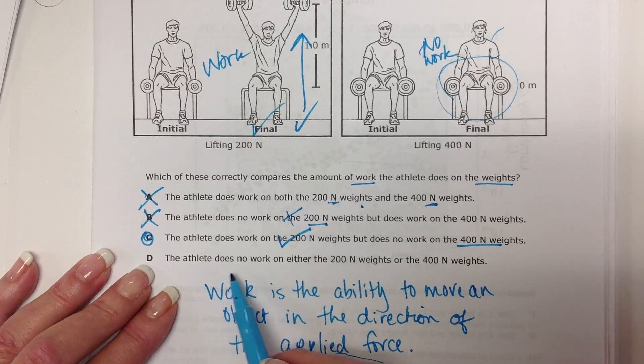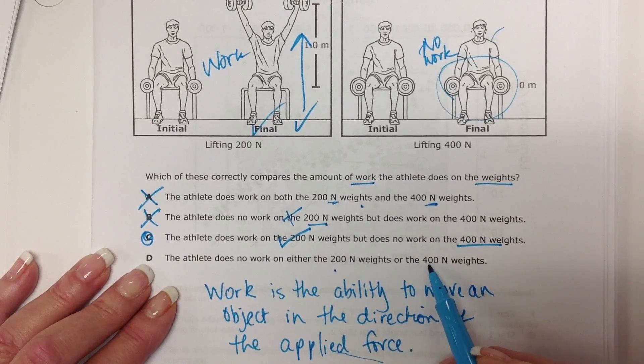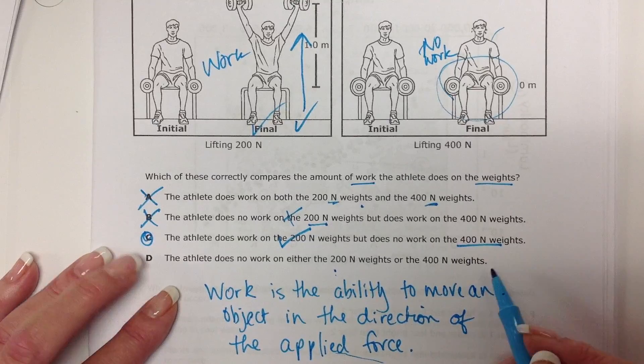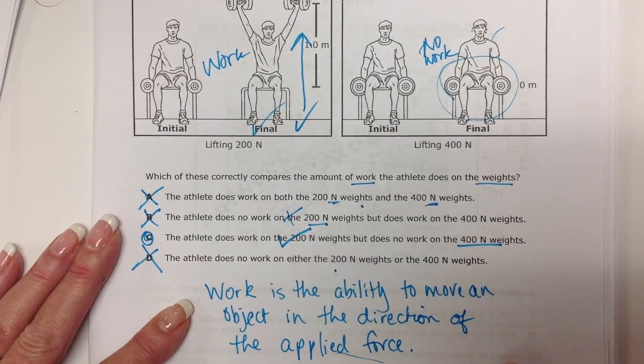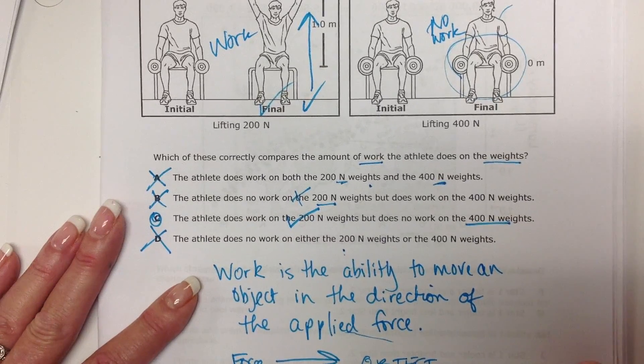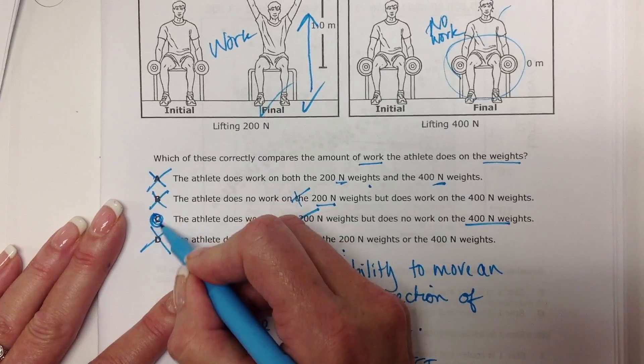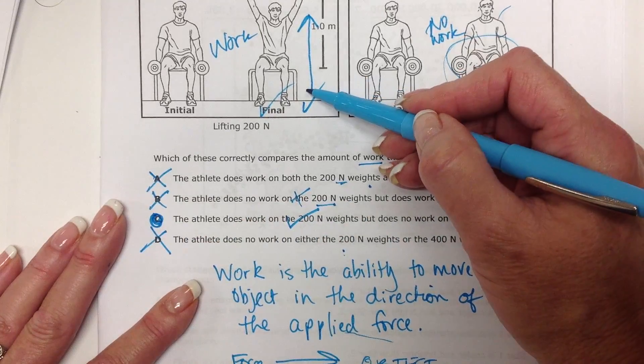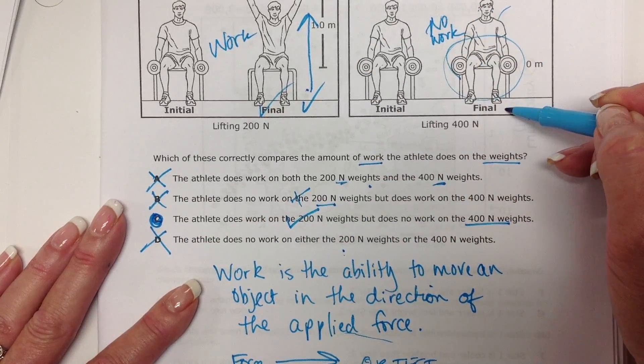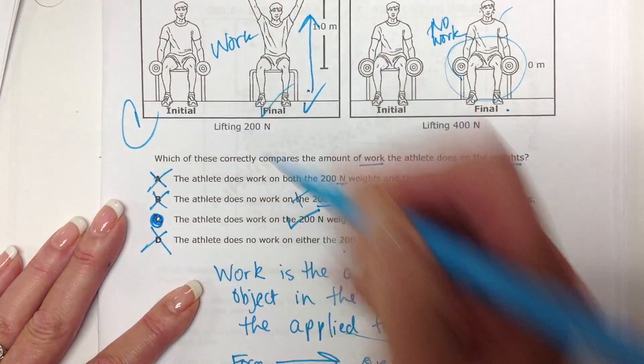The athlete does no work on either the 200 or the 400. That's not right. So, and I just rambled through that. I hope you caught all that. The answer choice here is correct because this is where he's doing work, and here he is not. Answer choice C.